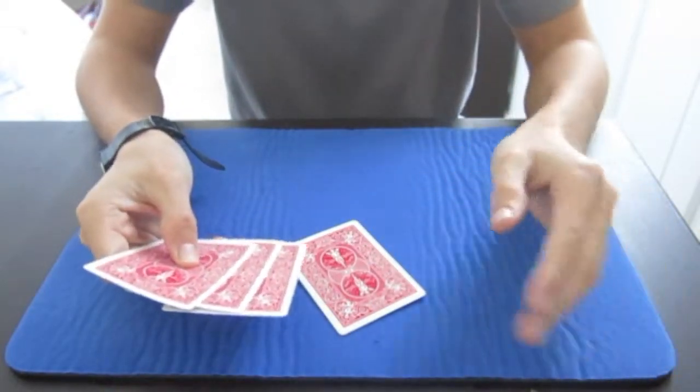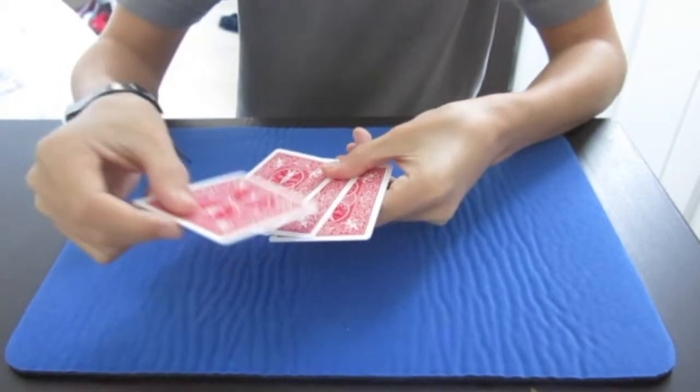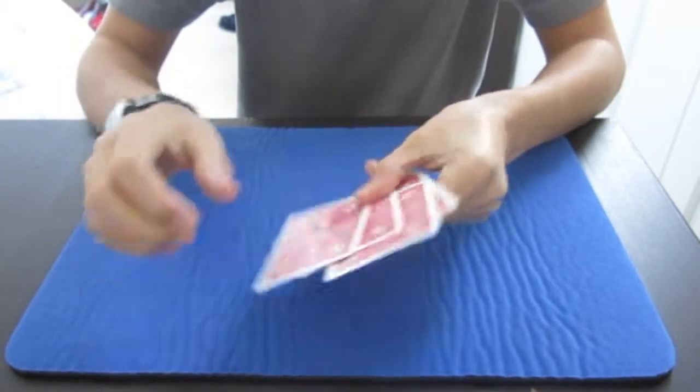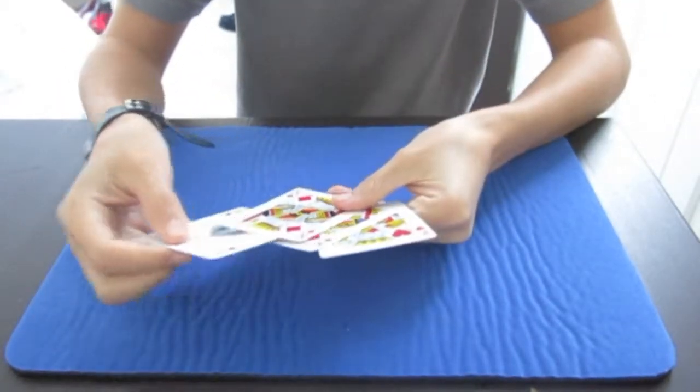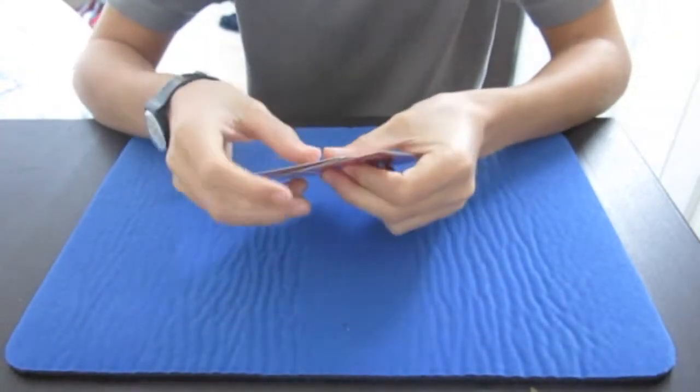You take the card you want to make disappear in the third position. One, two, three. And if you want to do it face up, one, two, three. I put it there. And then what you're going to do when you're in position...